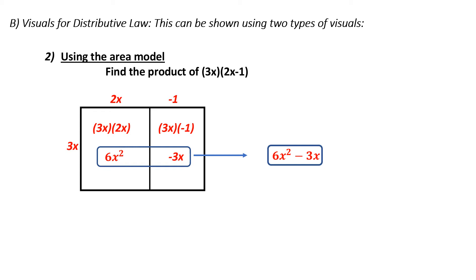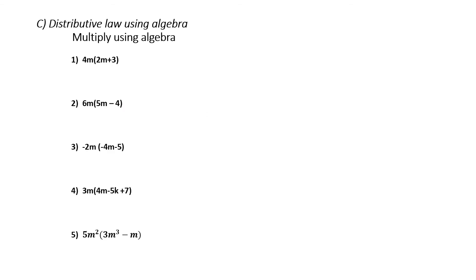Although helpful, it's not really convenient to do this on a regular basis. So we can do this using algebra. Remember, we took the 3 and multiplied by each term inside the bracket — this allows us to get rid of the bracket. Here, I'm going to take the 4m and multiply it by each term inside the bracket: 4m times 2m and 4m times 3. Multiplying these out: 4m times 2m gives me 8m squared. 4m times 3 gives me 12m. Notice these aren't like terms, so that is my final answer.